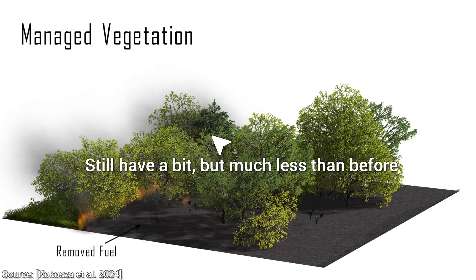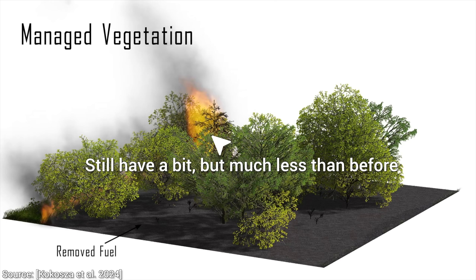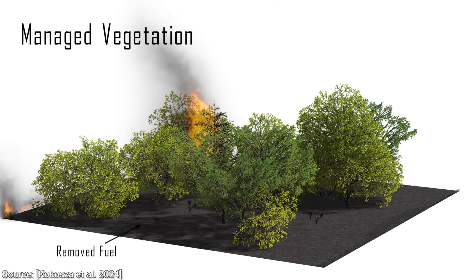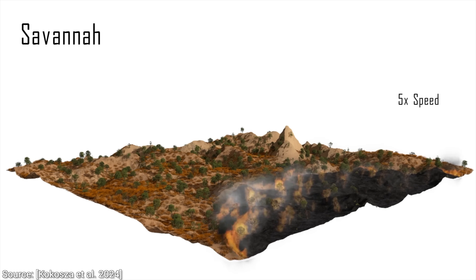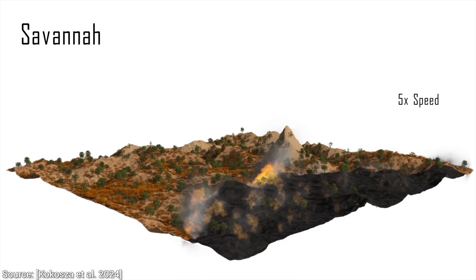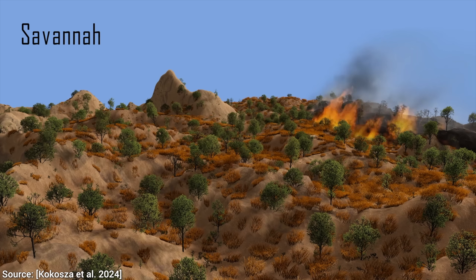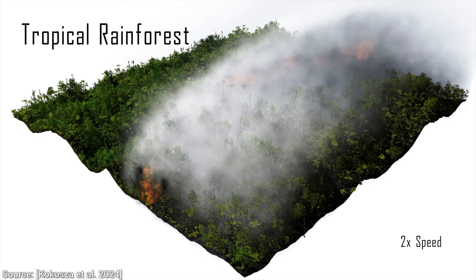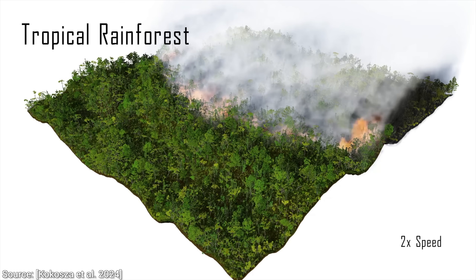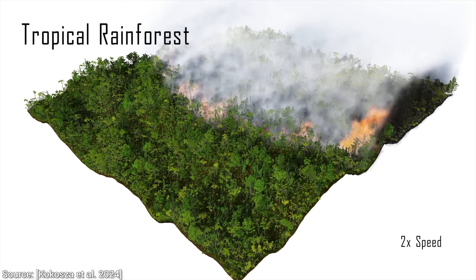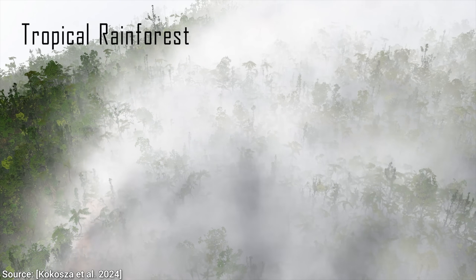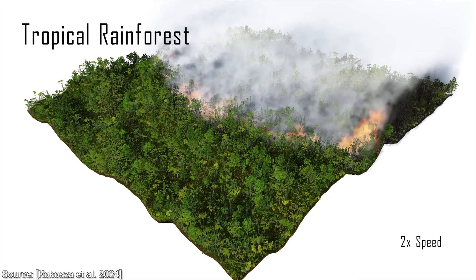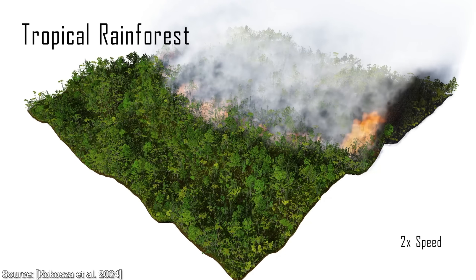If we see a savannah like this, a wildfire there is going to behave really differently. The grass catches fire immediately, then goes to the shrubs — not a lot of vapor. But if the same happens in a tropical rainforest, look at that — they even simulated the vapor, which will help the taller trees avoid the fire. The simulation quality is incredible.